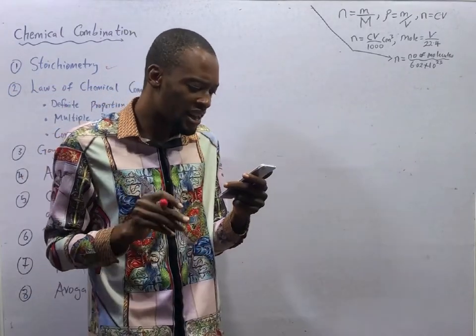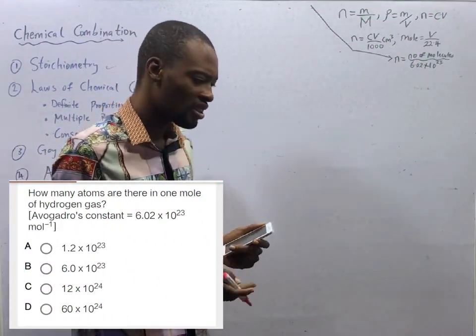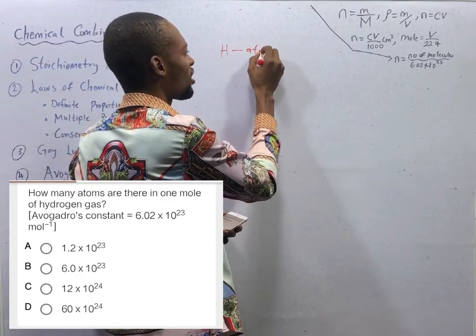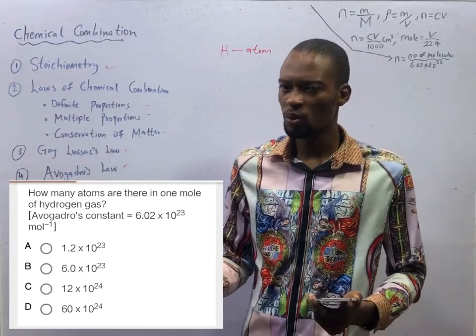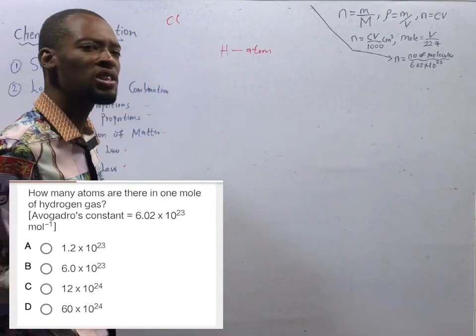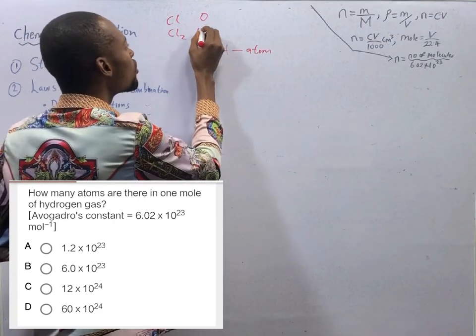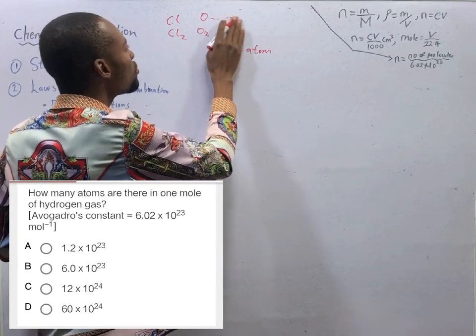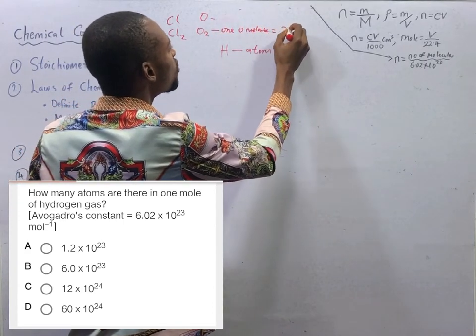How many atoms are there in one mole of hydrogen gas? One mole of hydrogen gas. Look at it. This is hydrogen atom. Hydrogen gas or hydrogen generally, it exists as molecule. You see that we say that chlorine is Cl, but in most equations, chlorine is like this Cl₂. Or we say oxygen atom is O, oxygen molecule is O₂. One oxygen molecule contains two atoms. One chlorine molecule contains two chlorine atoms.